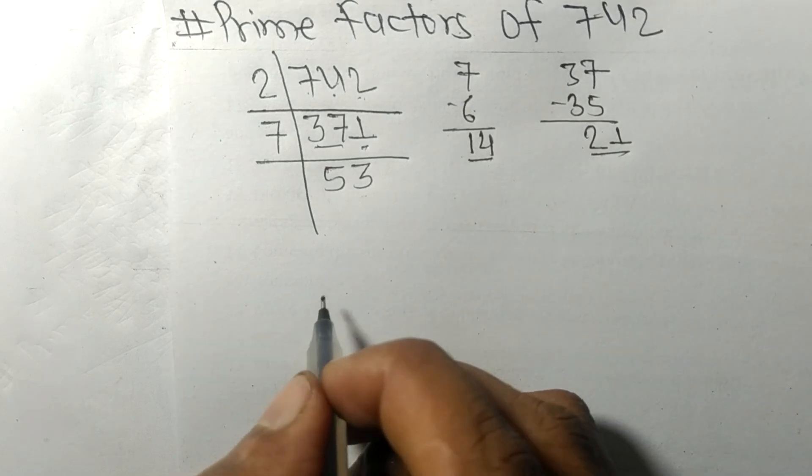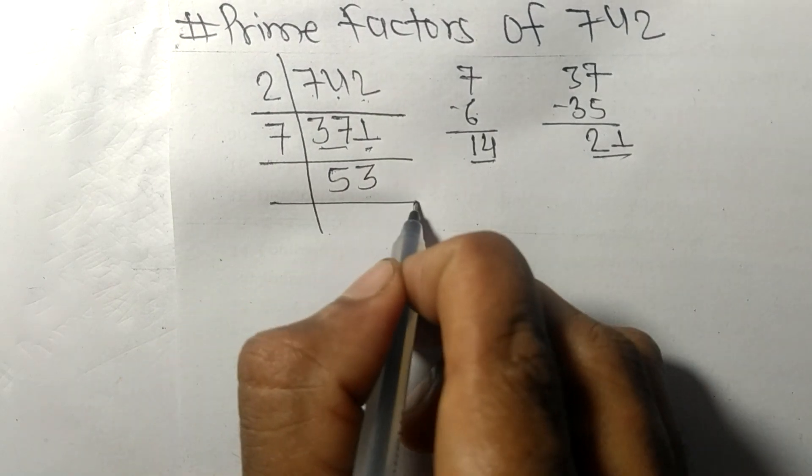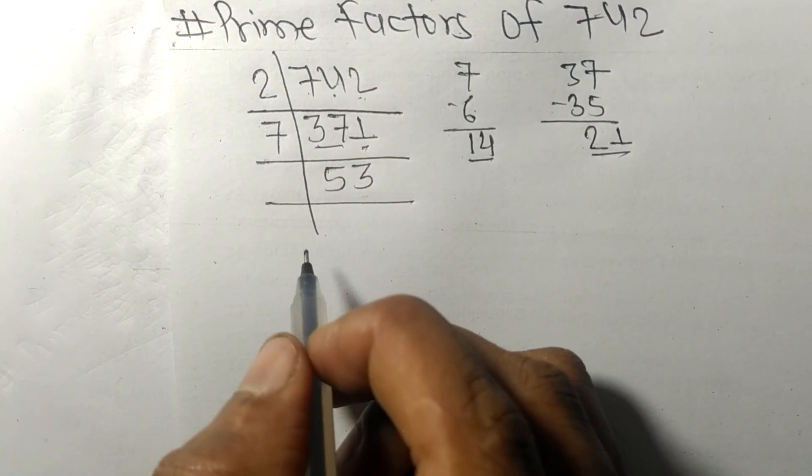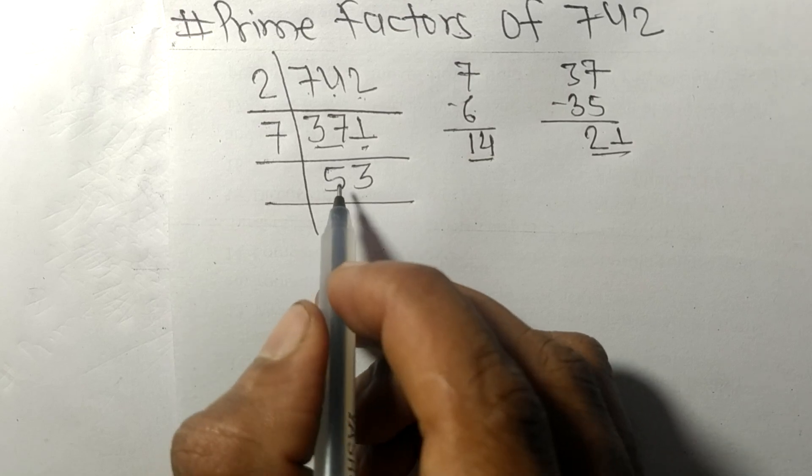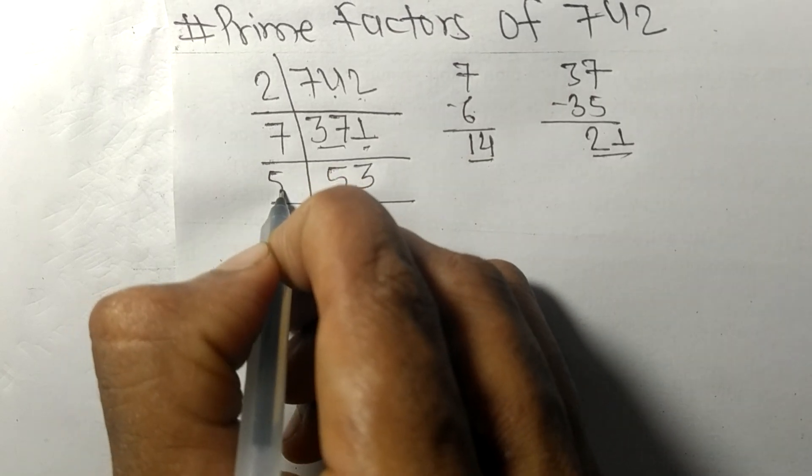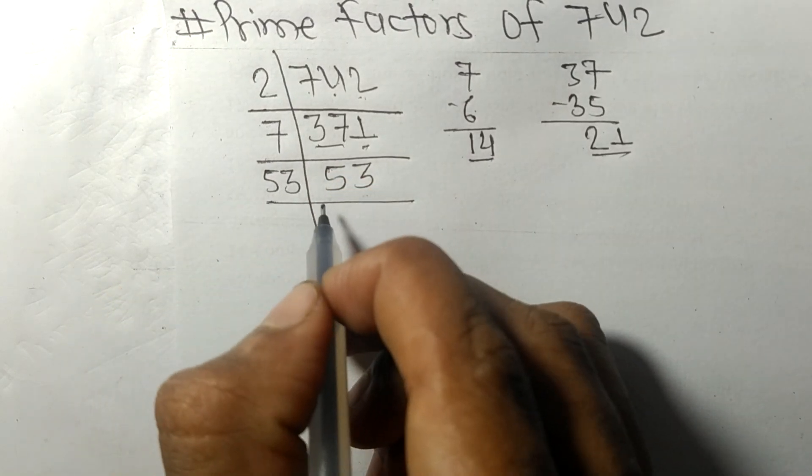So now we got 53, which is a prime number, so it is divisible by 53 only.